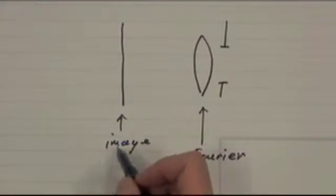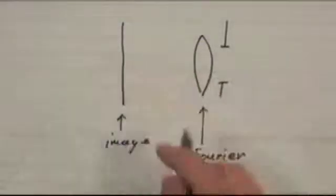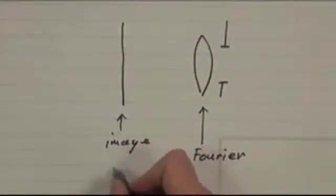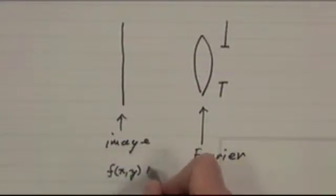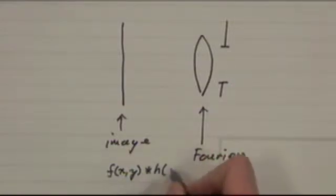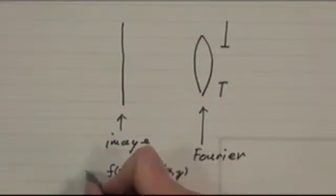So what will happen is that in the image domain, the image here you should have would have liked to have formed, say f of x, y, will be convolved with some point spread function, which we'll call h of x, y, to produce the actual image, which is g of x, y.